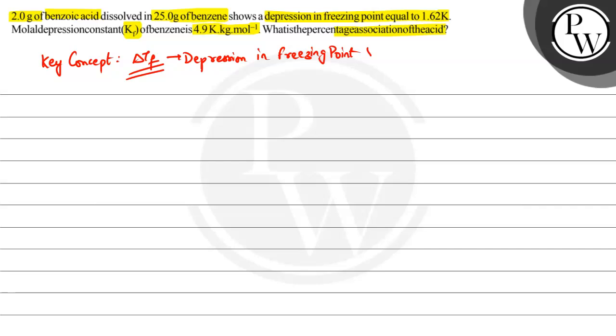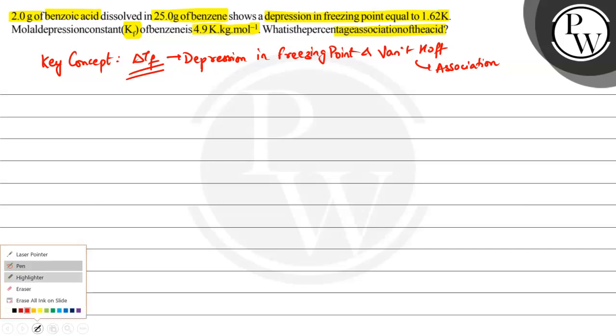Other than that, we also have Vanthoff factor, which helps us with the association percentage. Let's use delta Tf. We have all the data that we need. Delta Tf is going to be equal to I into Kf into molality, right?